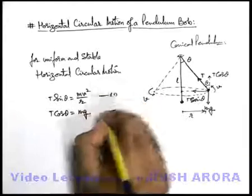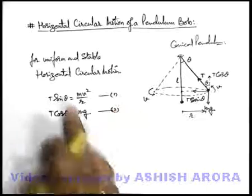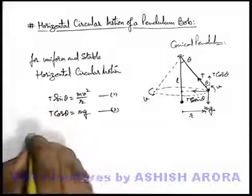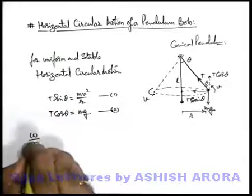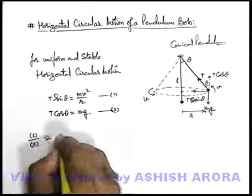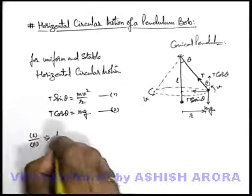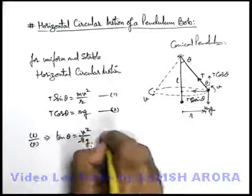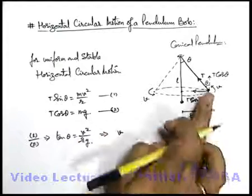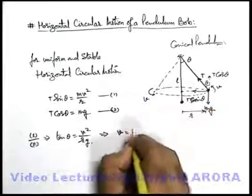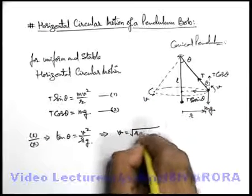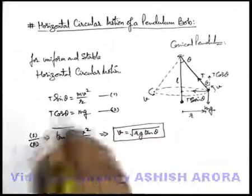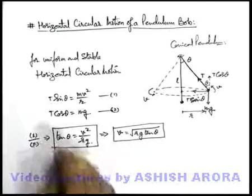From these equations one and two, we can relate several parameters of this conical pendulum. Like if we divide these equations one by two, you can see tensions get cancelled out, and it'll be tan theta is equal to v square upon r g, or it gives the speed with which it should be thrown so as to revolve in a stable circular path is root of r g tan theta. These are the relations you should keep in mind. Direct problems can be asked based on this.